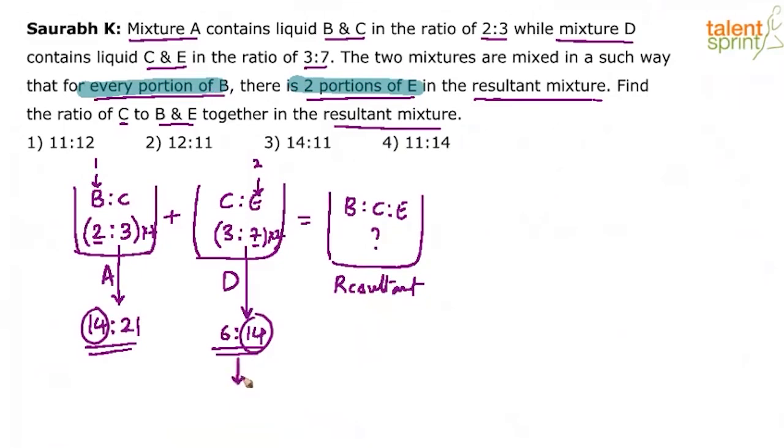So basically what we can do is we will multiply this ratio by 2 again. So 6 is to 14 becomes 12 is to 28. And this will remain as it is into 1. Why into 1? We are just trying to do what the question says. So this remains 14 is to 21. For every one portion of B, we are taking two portions of E.